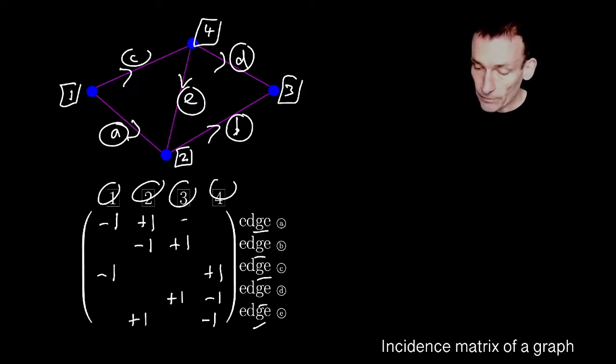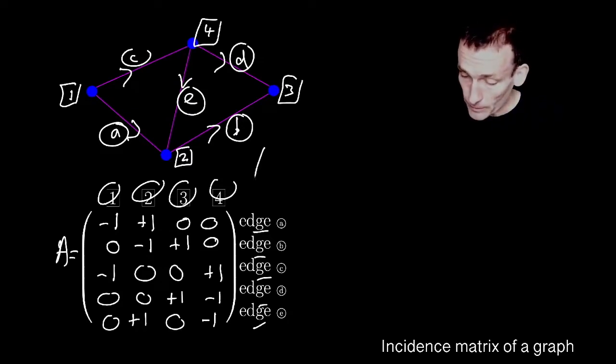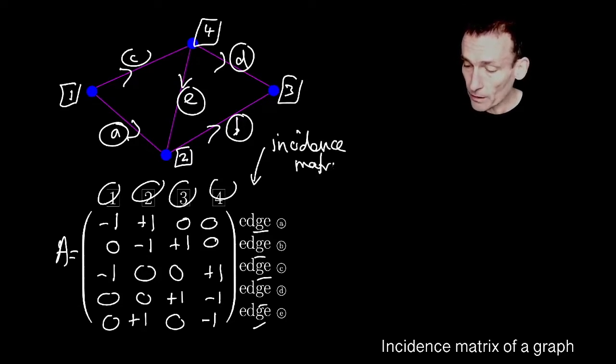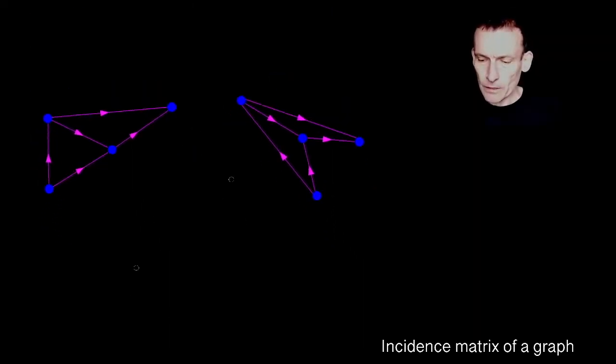And then everywhere else was zero. And that's how I constructed this matrix I called A. And what we call this is we call this the incidence matrix of the graph. The graph is at the top. Below is its incidence matrix. It's just got zeros, ones, minus ones.